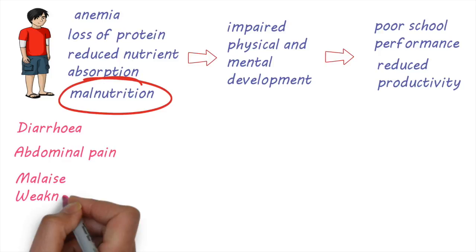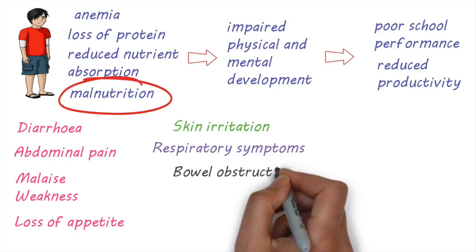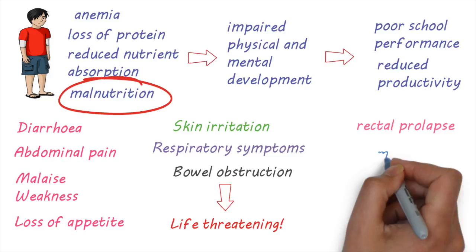With hookworm infections, there could be skin irritation where the larvae enter the body, and sometimes people present with respiratory symptoms when the worms travel through the lungs. Heavy infections can lead to bowel obstruction, which can be life threatening. Whipworm infections can lead to rectal prolapse. Sometimes the worms can migrate and cause disease in other parts of the body, like the bile ducts and nasal sinuses.